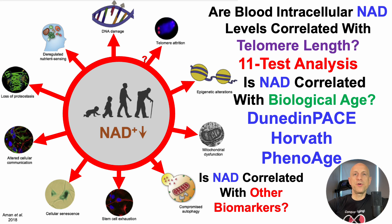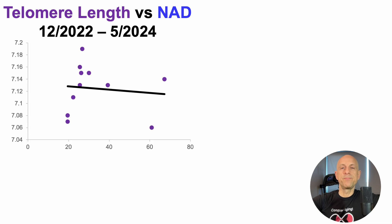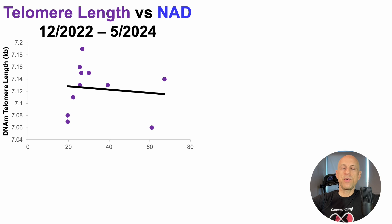Taking it a step further, I also have data for about 25 other biomarkers — so is NAD significantly correlated with any of those? Let's start by looking at telomere length versus NAD. On the y-axis, we've got DNAm telomere length — that's the DNA methylation-based epigenetic estimation of telomere length.